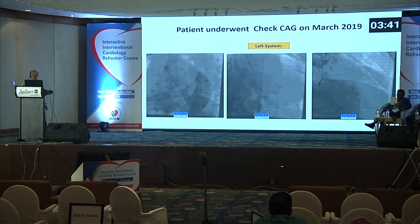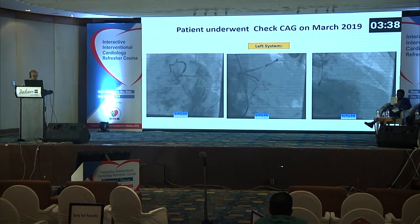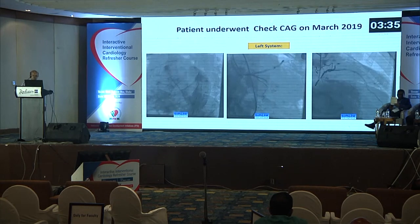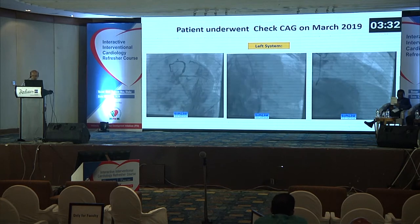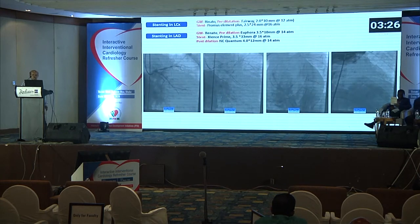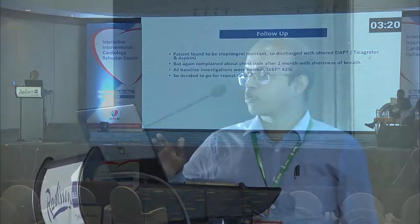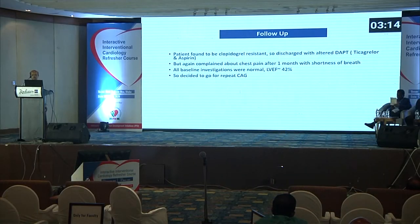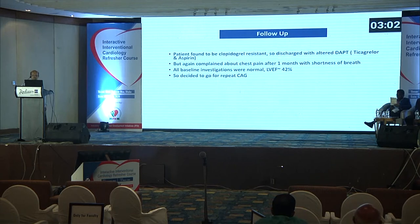This is the CSE, undertaken in March 2019. It shows the patient had stenosis in the left main and LCX. Stenting was done in LCX and LAD. At follow-up, the patient was found to be clopidogrel resistant, so it was discarded, and ticagrelor and aspirin were started. But the patient complained of chest pain after one month, with shortness of breath. All baseline investigations were normal, and LV ejection fraction was 42%, so a decision was made to repeat the CSE.